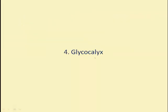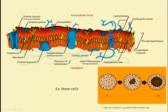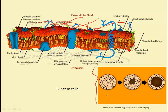The glycocalyx is another membrane feature. It is formed by a large number of glycoproteins and glycolipids — sugar chains attached to phospholipids and proteins — creating a carbohydrate coat on the cell surface. Various short polysaccharide chains provide markers for cell-to-cell recognition, which is crucial during embryonic development for sorting cells into specific tissues and organs.